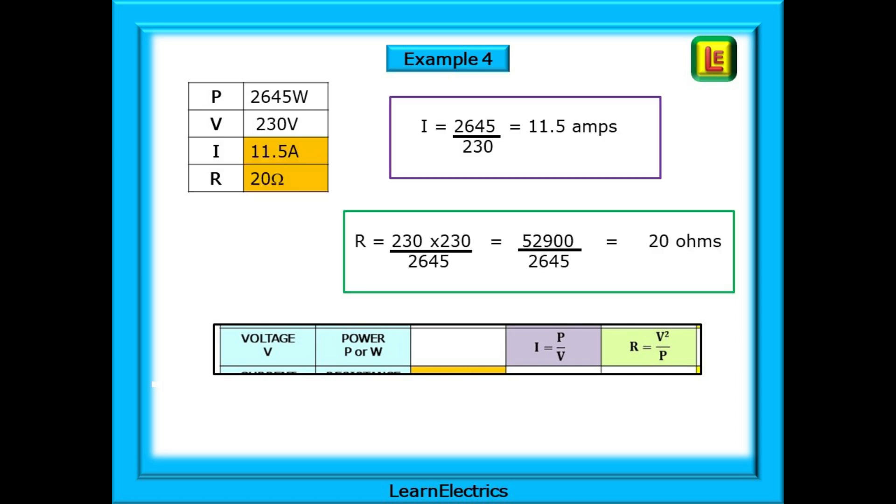The answers are shown here. I, the current, is 11.5 amps and the resistance R is 20 ohms. A nice easy one and knowing that the calculation of current is equal to the power divided by the voltage will be so useful to you in the workplace. Power divided by volts equals current.